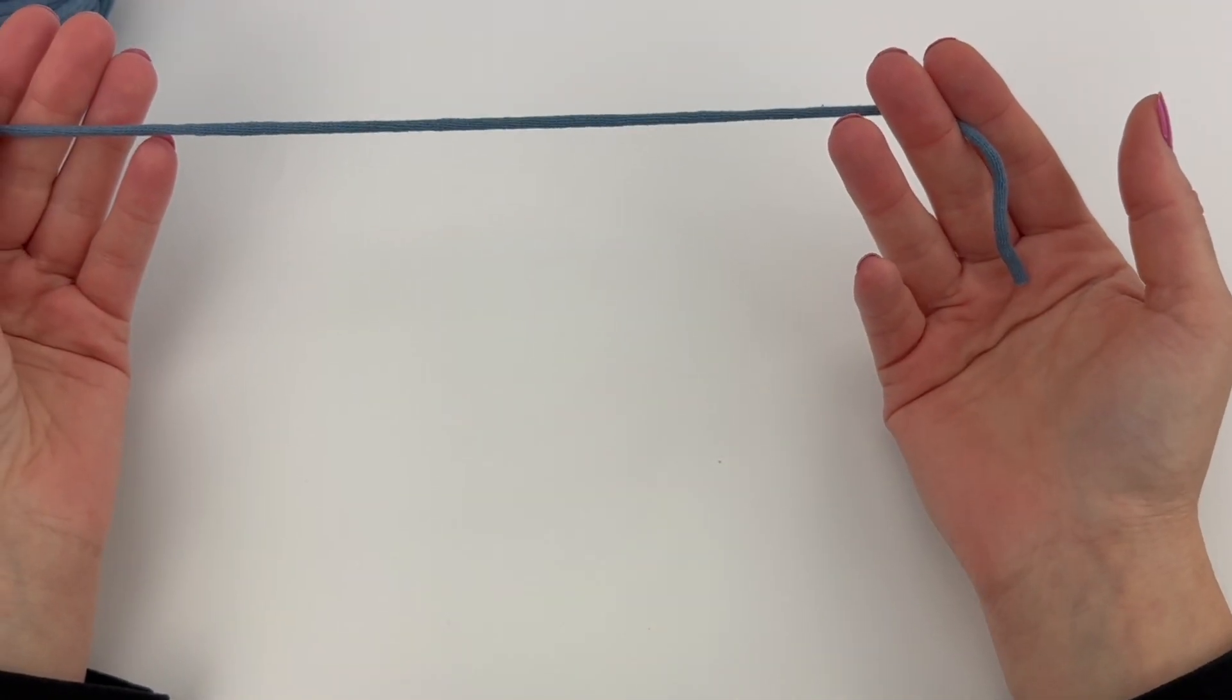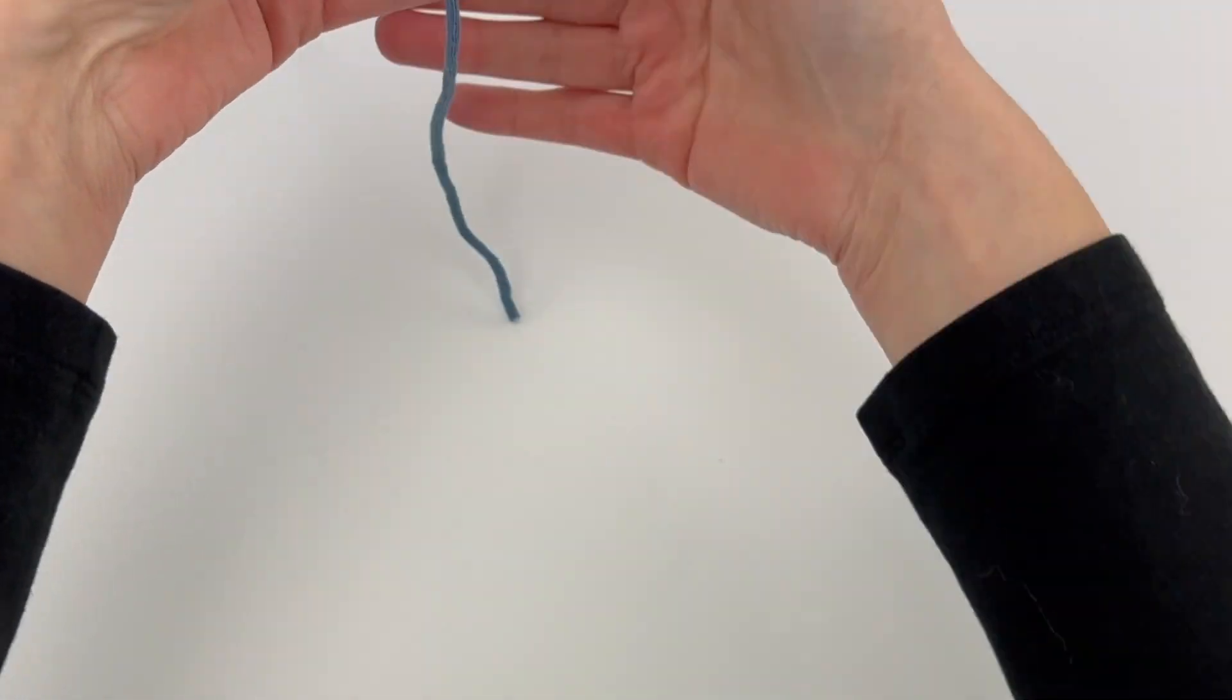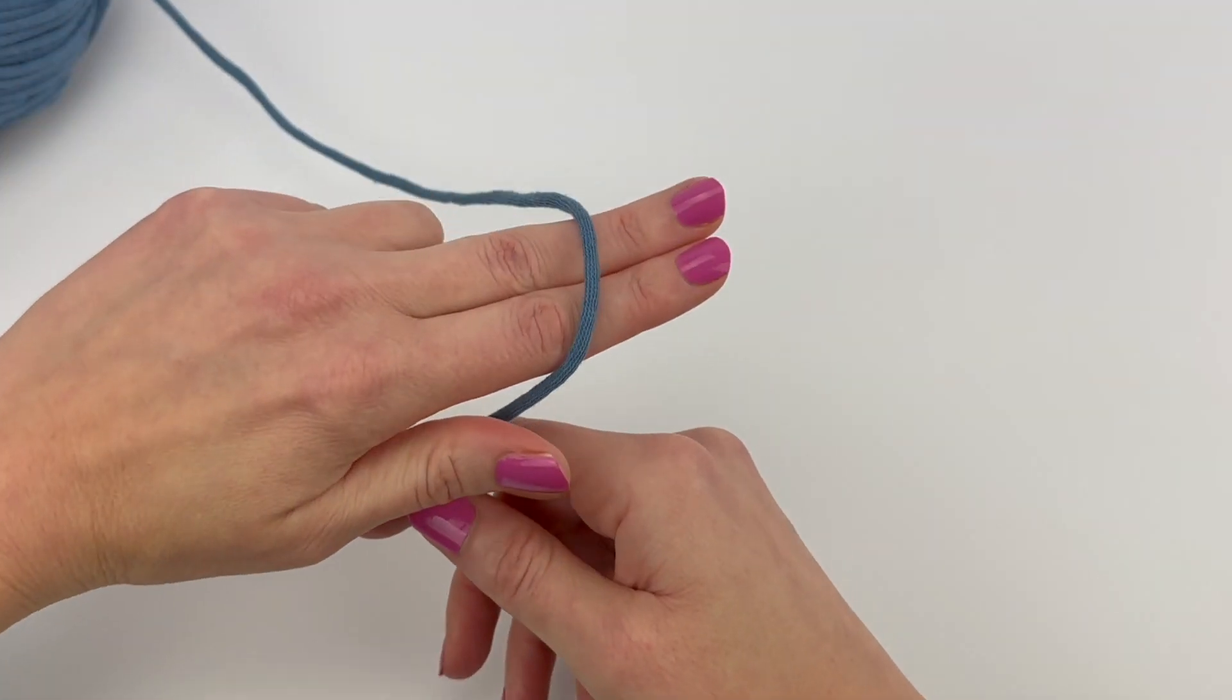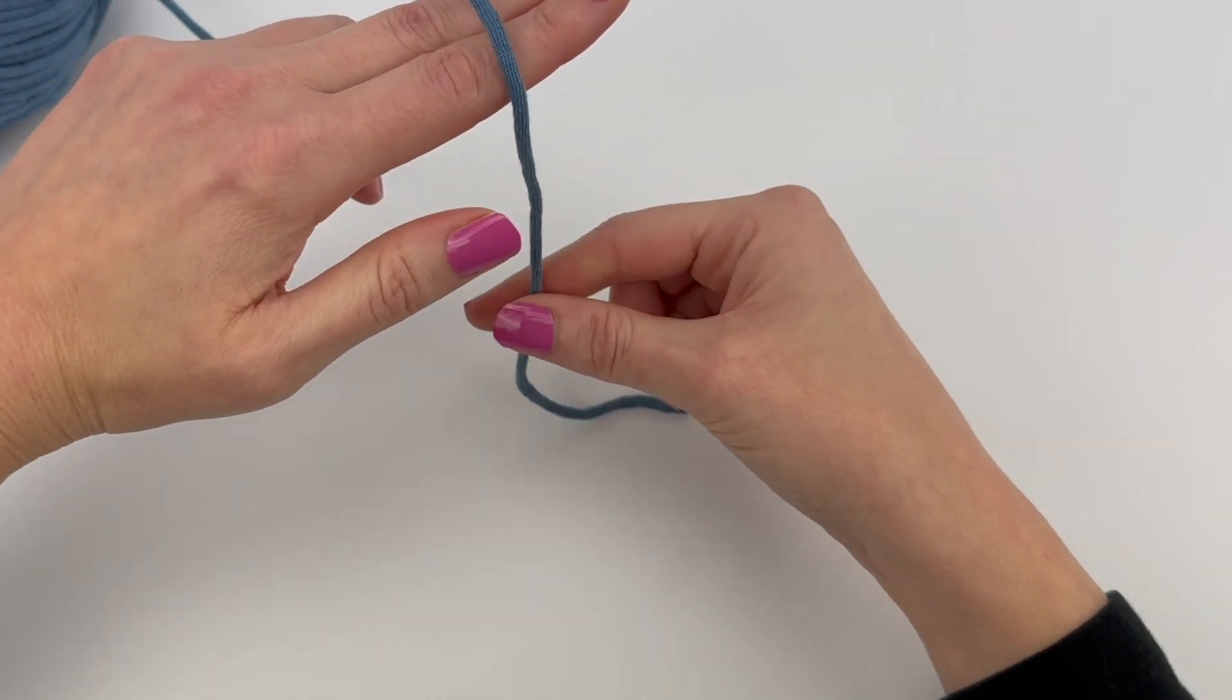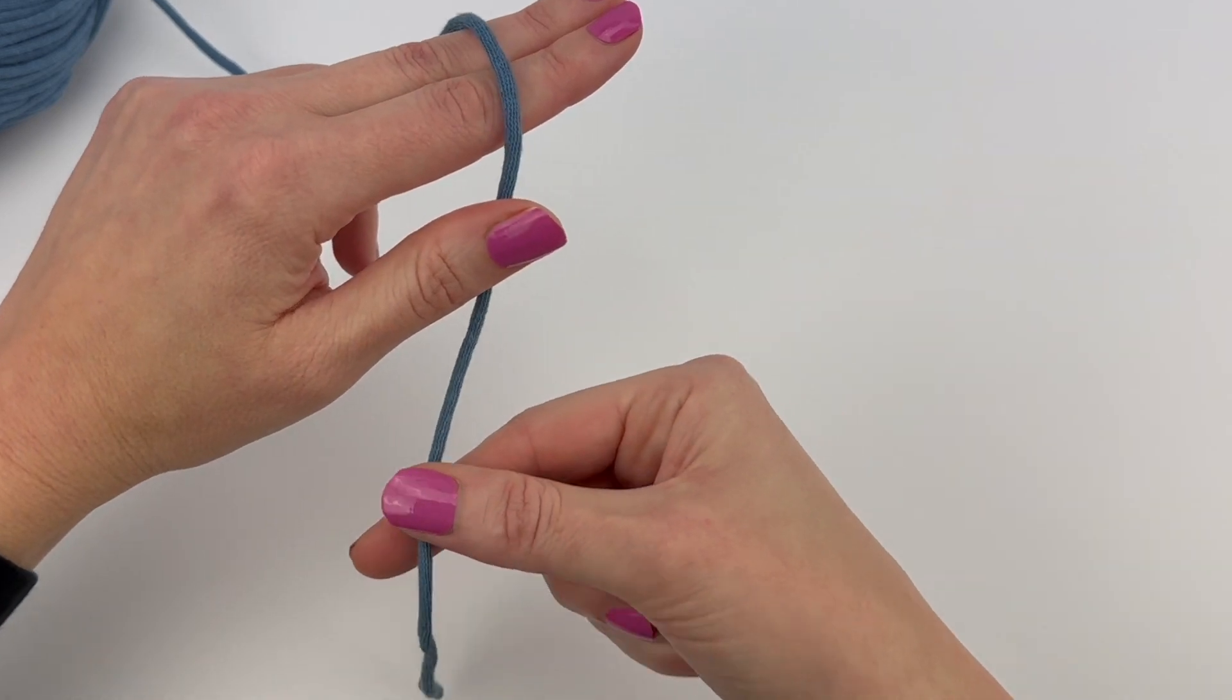To start we're going to take the end of the yarn and put the tail over our two fingers, leaving about an eight inch long tail so that you have enough to weave in your ends after you're finished.